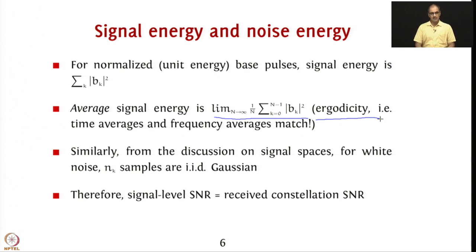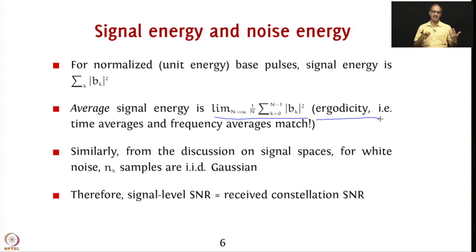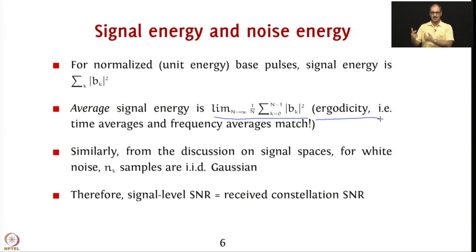Similarly, from our discussion on signal spaces, the noise samples n_k are also i.i.d. Gaussian, due to the same orthogonality arguments. Therefore, the signal-level SNR equals the received constellation SNR. Whenever you have the received constellation with all its noise, the SNR is essentially the same because match filtering and sampling are performed and do not add any noise. So the SNR before receiver operations equals the SNR after sampling, when deciding which constellation symbol was sent.